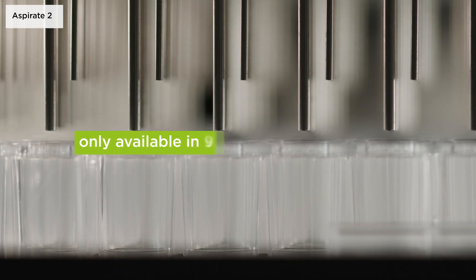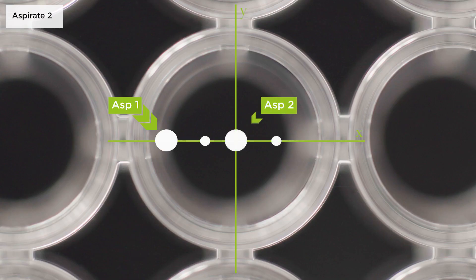Crosswise aspiration is only available in 96 well flat bottom plates where a second aspiration position can be defined, typically close to the centre of the well to reduce the residual volume.